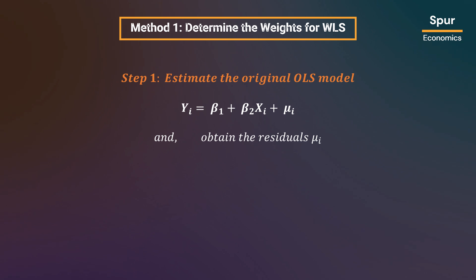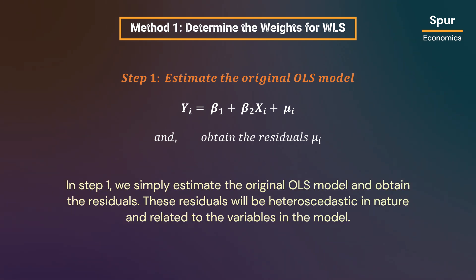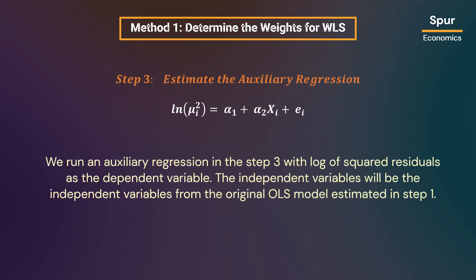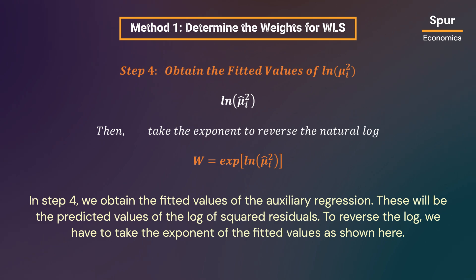Let us take a look at the first method of determining the weights. In step 1, we simply estimate the original OLS model and obtain the residuals — these residuals will be heteroskedastic in nature and related to the variables in the model. In step 2, we take the square of these residuals and then take the natural logarithm of the squared residuals as shown here. We run an auxiliary regression in step 3 with the log of squared residuals as the dependent variable, and the independent variables from the original OLS model as regressors. In step 4, we obtain the fitted values of the auxiliary regression — the predicted values of the log of squared residuals — and then take the exponent of those fitted values to reverse the log.